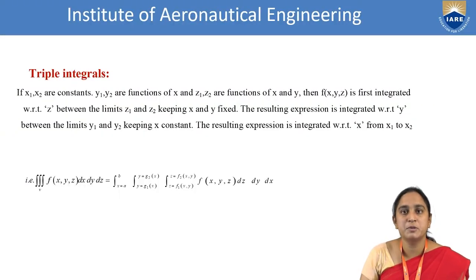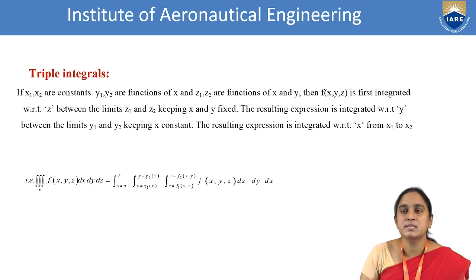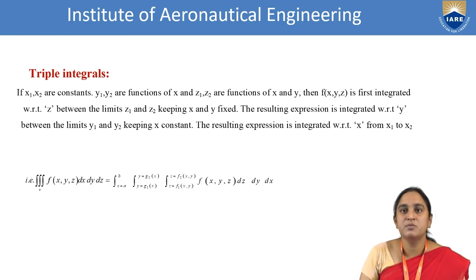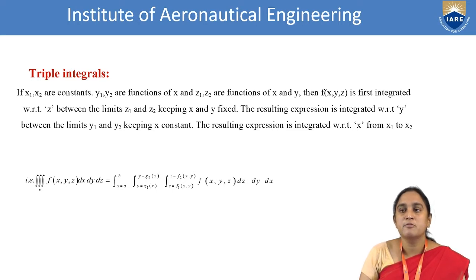Now I will discuss the definition of the triple integral. If x1 and x2 are constants, y1 and y2 are functions of x, and z1 and z2 are functions of x and y, then f(x, y, z) is first integrated with respect to z between limits z1 and z2, keeping x and y fixed. The resulting expression is integrated with respect to y between limits y1 and y2, keeping x constant. That result is then integrated with respect to x from x1 to x2. This is the procedure for the triple integral.